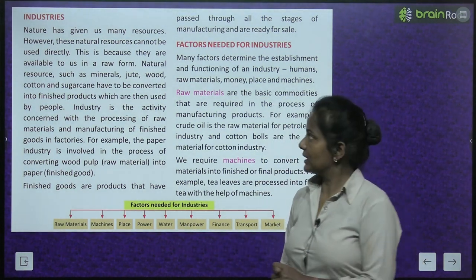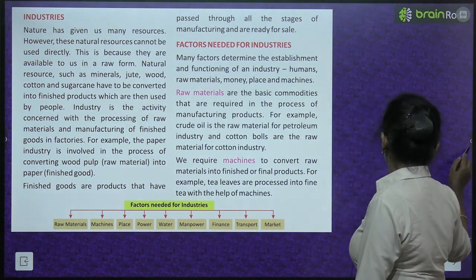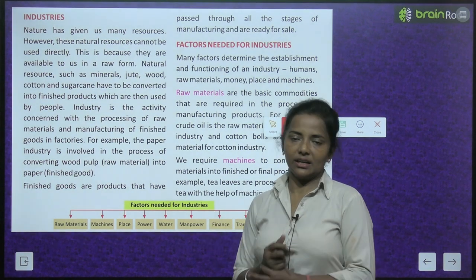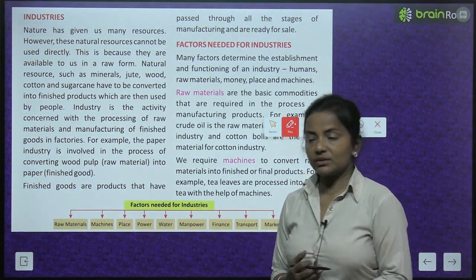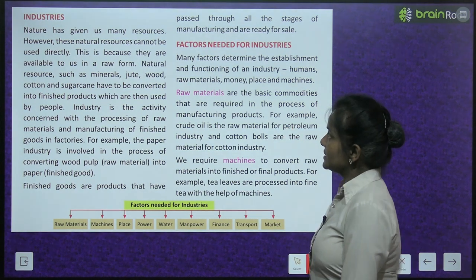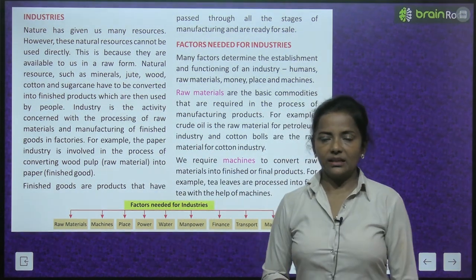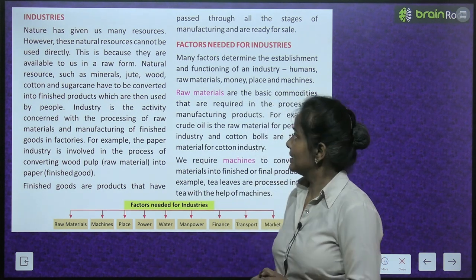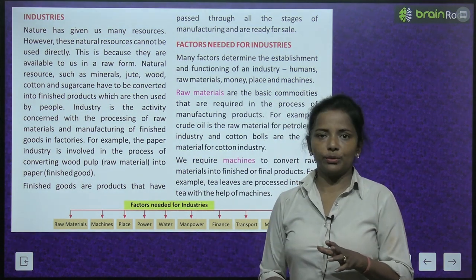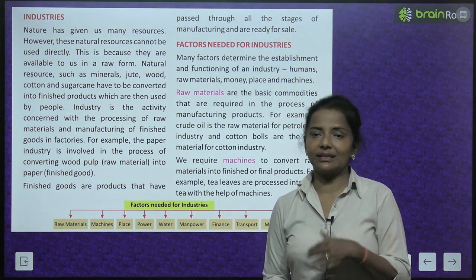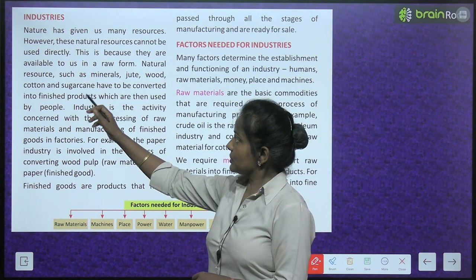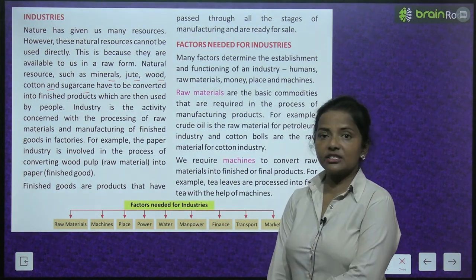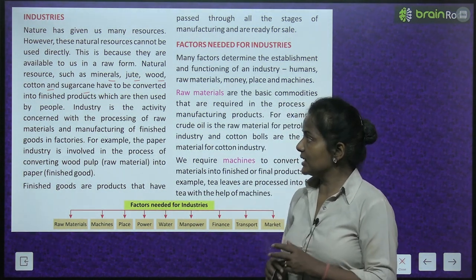What are industries? Nature has given us many resources. However, some natural resources cannot be used directly because they are available to us in a raw form. Natural resources such as minerals, jute, wood, cotton and sugar cane have to be converted into finished products, which are then used by the people.